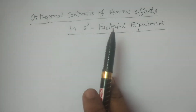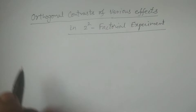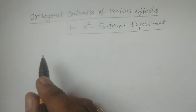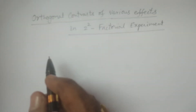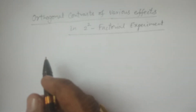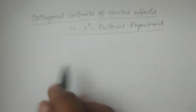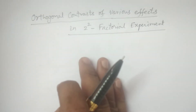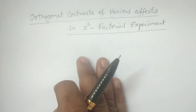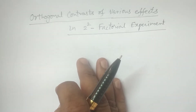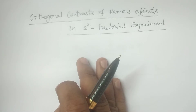What are the various effects? There are three particular effects: the main effect of A, the main effect of B, and the interaction effect of AB. I will examine whether these effects are orthogonal contrasts or not. First I check contrast, and then I check orthogonal contrast.